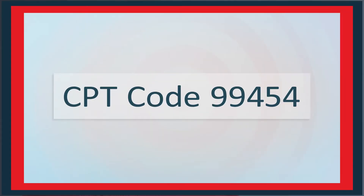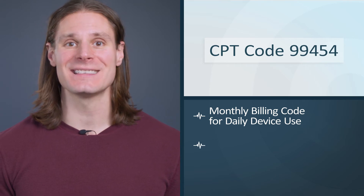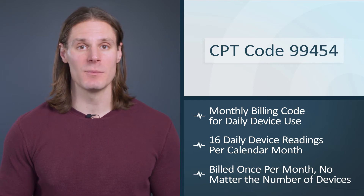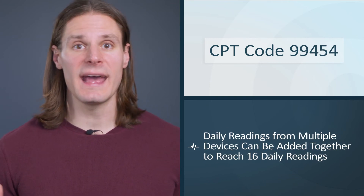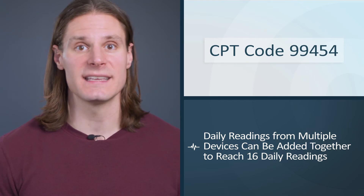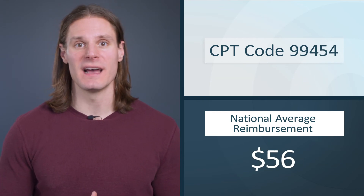Keep in mind these are national average reimbursements and may vary in your area. The other device-based code is CPT code 99454, which is for daily monitoring. 99454 will only trigger once the patient takes 16 readings within a calendar month. This billing code is also a one-time-per-month code no matter how many devices the patient has. If the patient does have multiple devices, you can total the readings from those devices to reach the 16 total days with readings. 99454 pays at about $56 national average reimbursement.